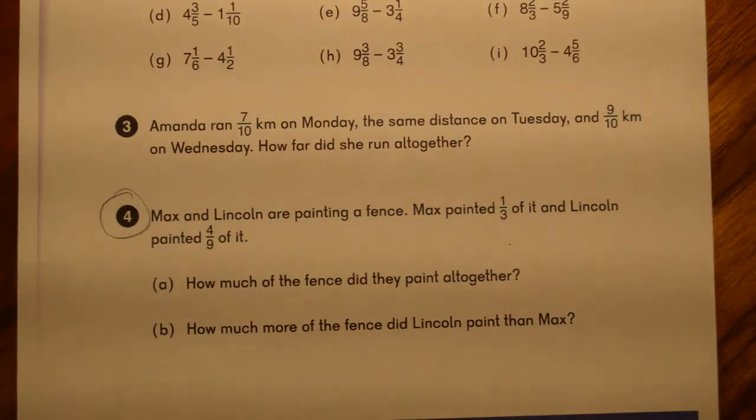So it says Max and Lincoln are painting a fence. Max painted a third of it and Lincoln painted four ninths of it. How much of the fence did they paint all together? So when you see all together, hopefully you're thinking addition, right?